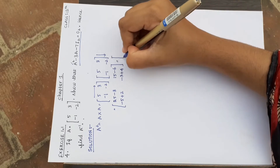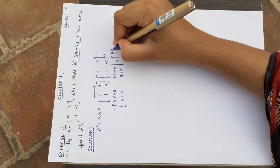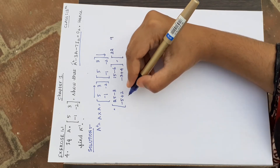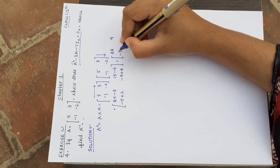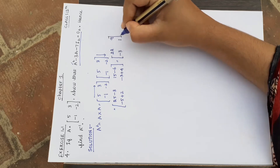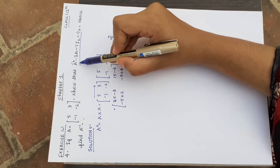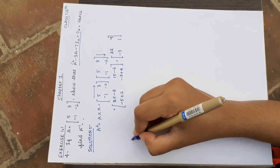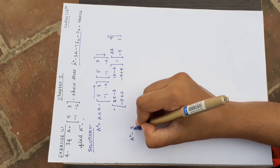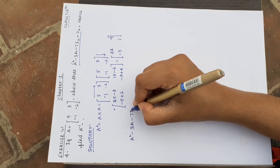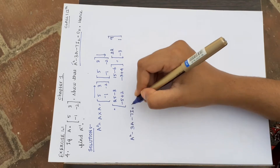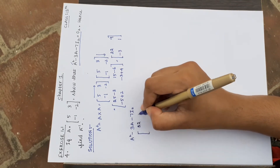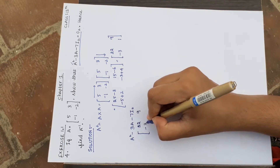So 25 minus 3 gives 22. 15 minus 6 gives 9. Minus 5 plus 2 gives minus 3. And 4 minus 3 gives 1. So our A square matrix is [[22, 9], [-3, 1]].